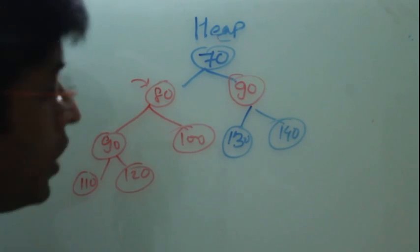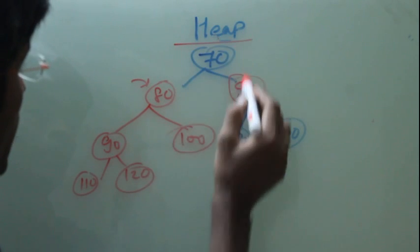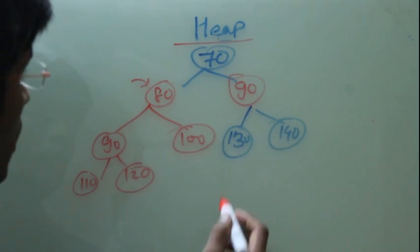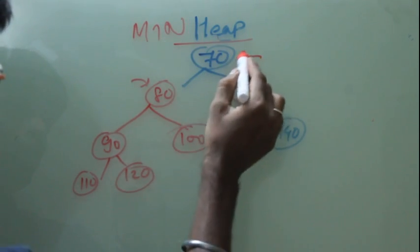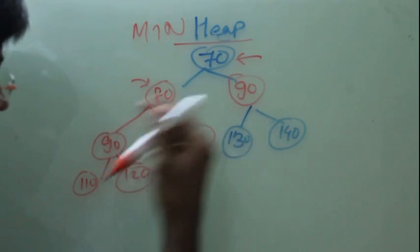So this satisfies the criteria of heap. It is a binary tree with degree 2 and it is having a heap order. And this is called a min heap because its parent is always less than 80 and 90.